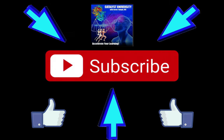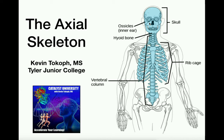Welcome back to Anatomy and Physiology on Catalyst University. My name is Kevin Togoff. In this video, we're going to discuss half of the axial skeleton, and really the bulk of this is just the skull. There are a lot of different bones in the skull — it's deceivingly complex. We're going to break it down using some color-coded skulls from different points of view.